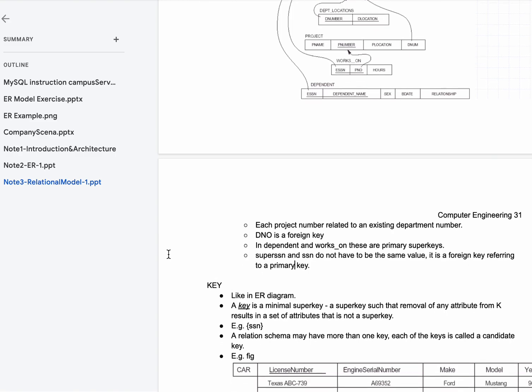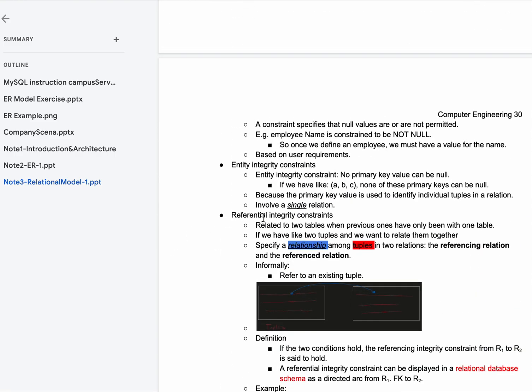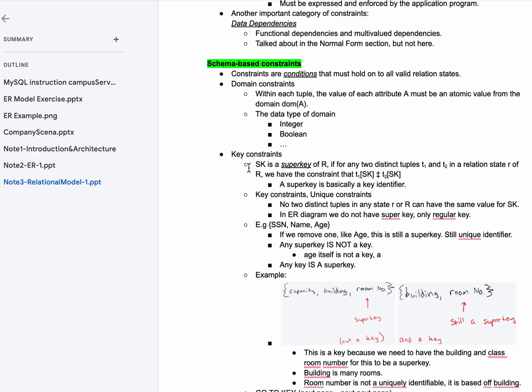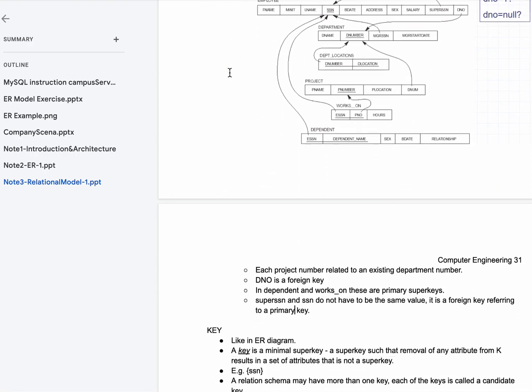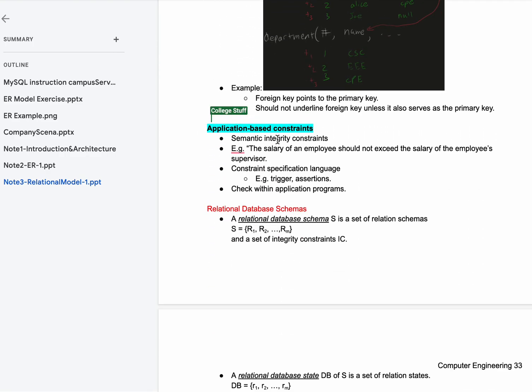That's it for this example. We've done keys, referential integrity constraints, entity integrity constraints, constraints on nulls, key constraints, and domain constraints. Now we are going to finally move on to our application-based constraints.